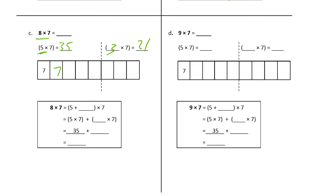Here are the three sevens on this side and the five sevens on this side. If we add 35 and 21, we can just look at the digits: three tens plus two tens is five tens, and five ones plus one one is six ones — no bundling. So eight times seven is 56. Using the distributive property, we split the eight into five plus three, still times seven, giving five sevens plus three sevens: 35 plus 21 equals 56.